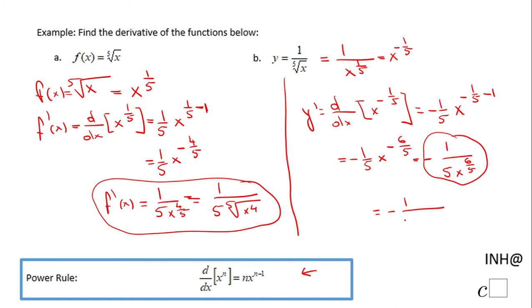That will be another form, or the final could be negative 1 over 5 x times fifth root of x. So these last three forms are very good answers.